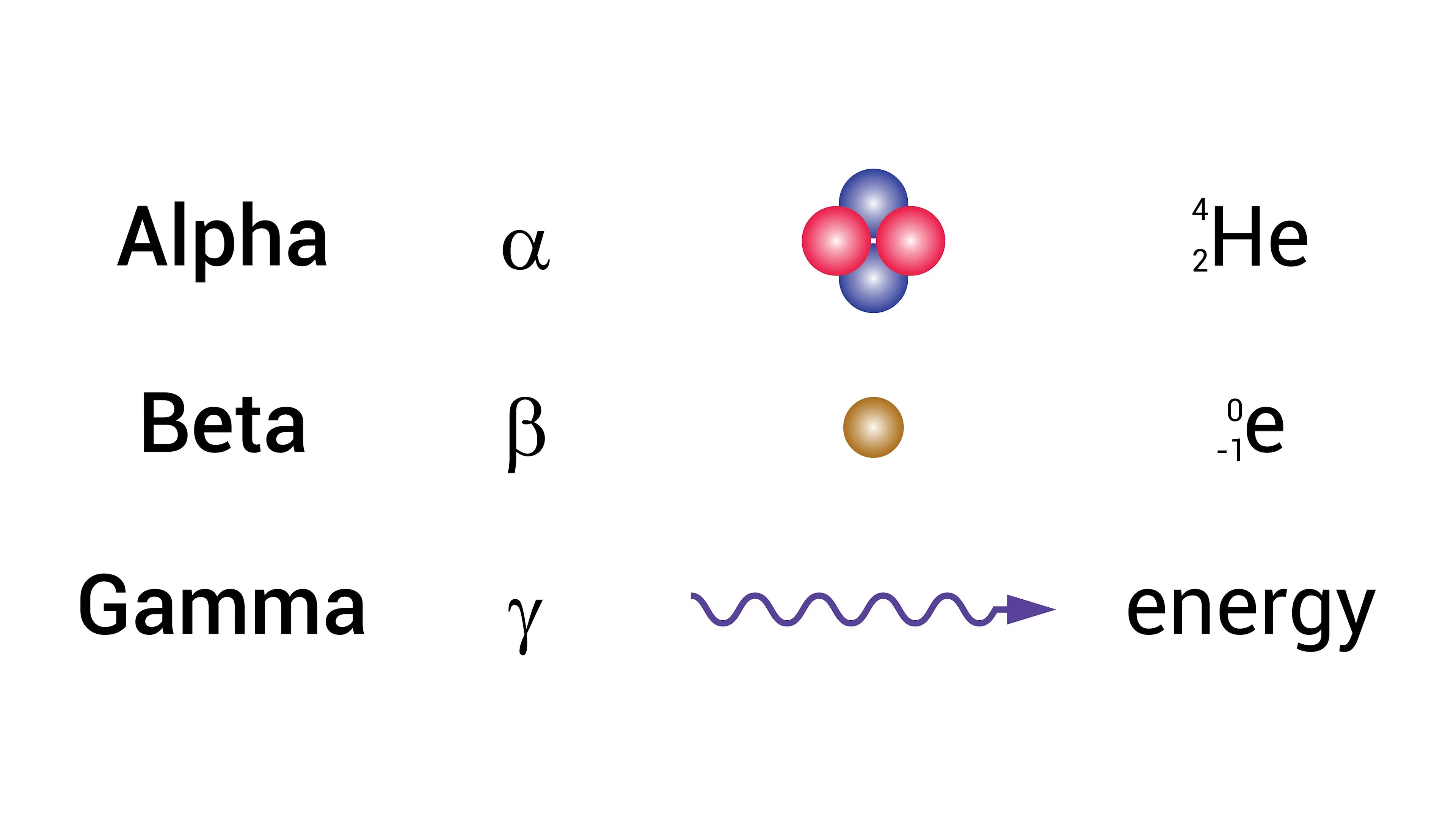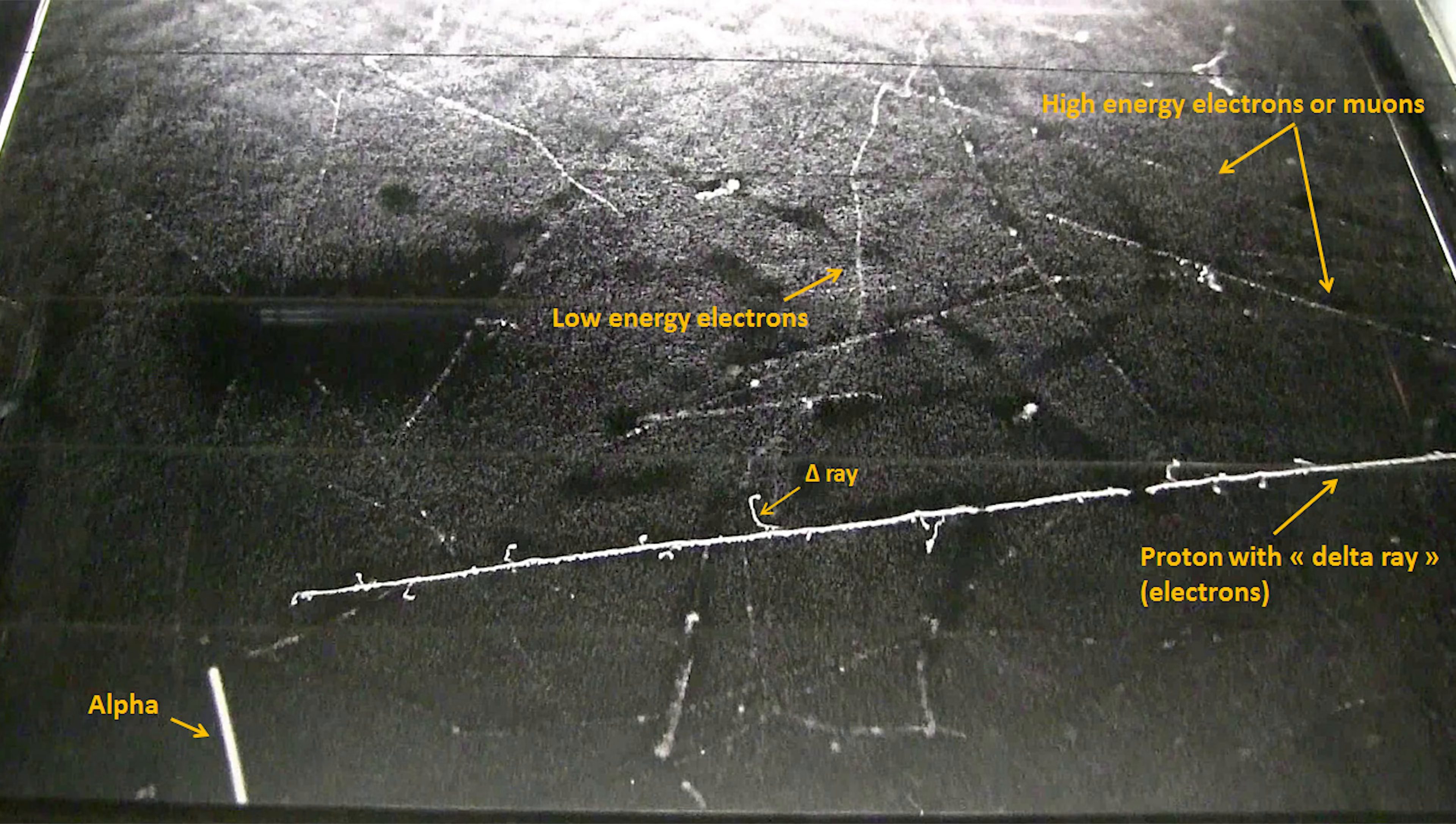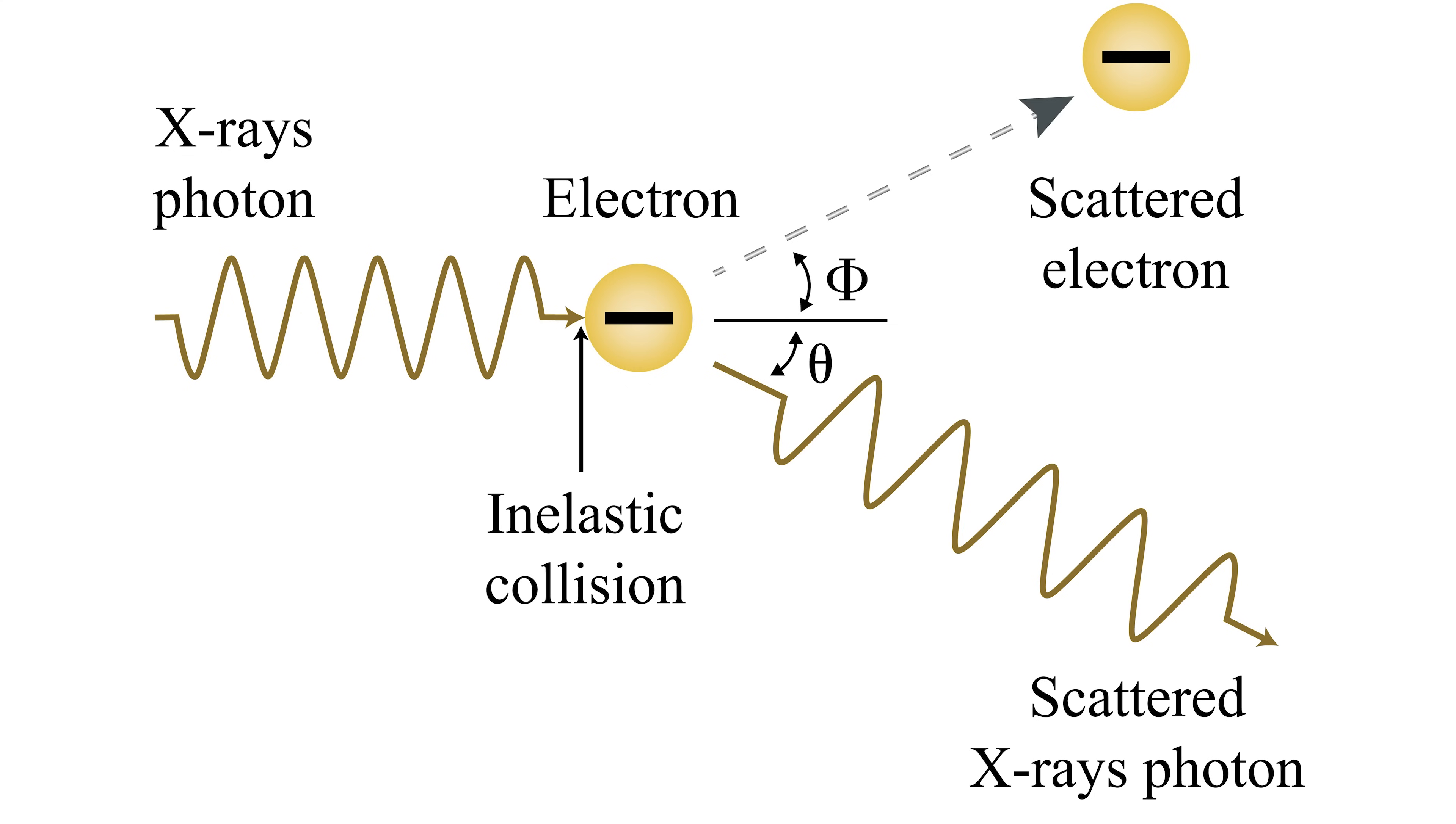But here's what I've always wondered. You can see alpha, beta, and sometimes gamma radiation. But can you see other kinds of ionizing radiation? Specifically X-rays? Well, let's find out.